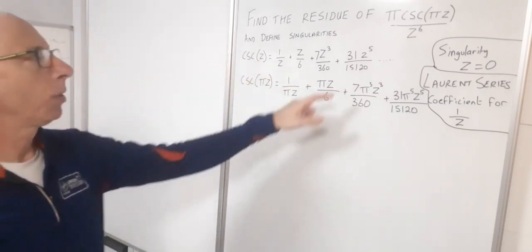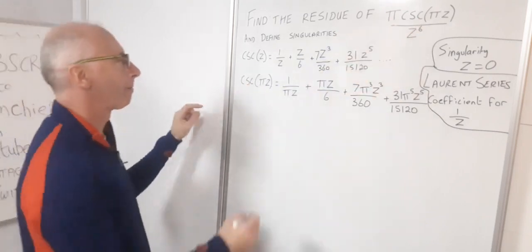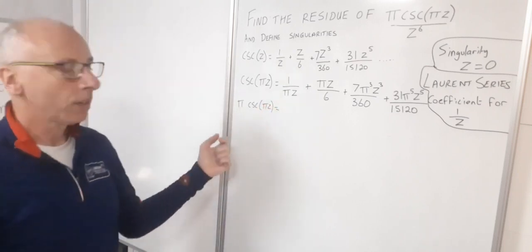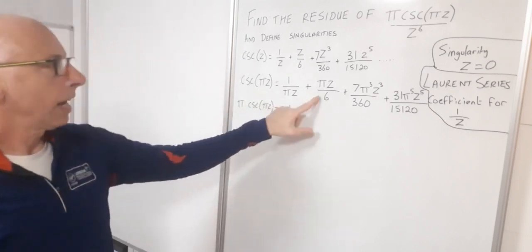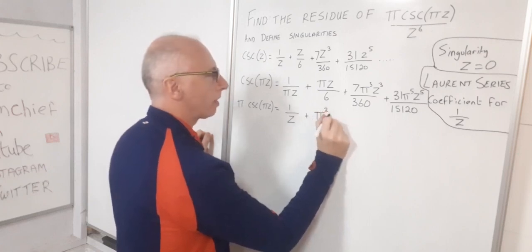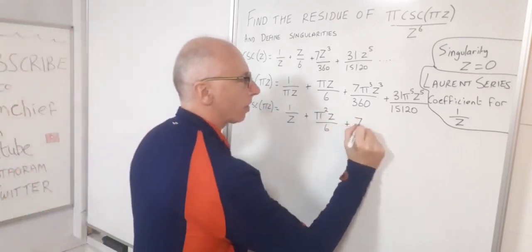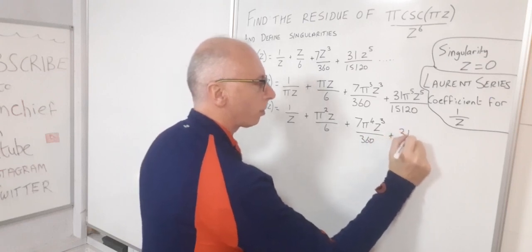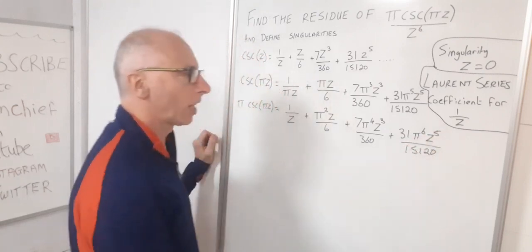So okay, but now we're looking for the next part. We've got π multiplying cosecant πz. So now let's multiply through by π. So π cosecant(πz). So now that's going to give us π over this one. That's just going to leave me now with 1/z. Now I'm going to have to multiply all these terms by π. So that's going to give us plus π²z/6. So you can see I've distributed the π into all the terms. So 7π⁴z³/360 plus 31π⁶z⁵/15,120.